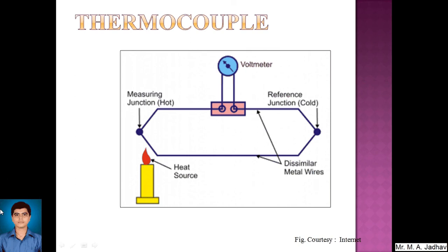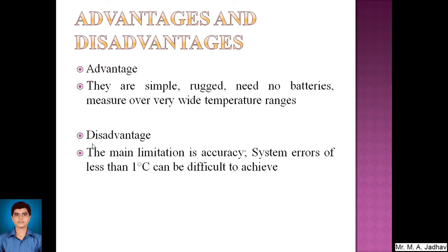Advantages of thermocouples: they are very simple, rugged, and need no batteries because voltage is generated directly by the change in temperature at the junction. They can measure over a very wide temperature range. There are different types of thermocouples — J type, K type, T type — using different metal pairs such as copper-constantan, iron-constantan, and aluminum-chromium. Each thermocouple has its own measurement range.